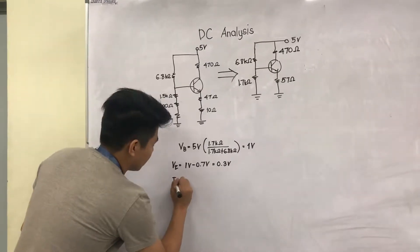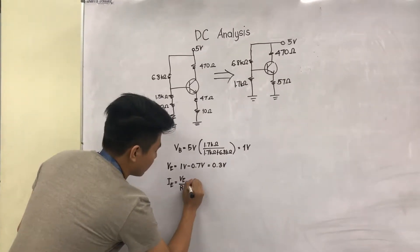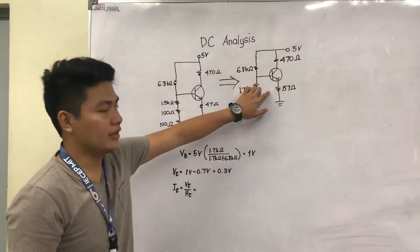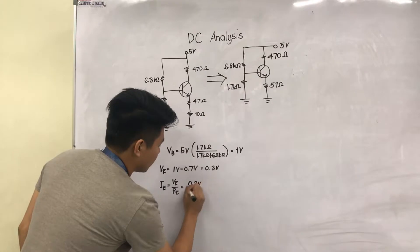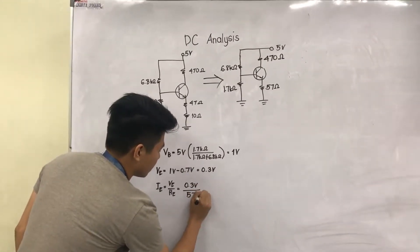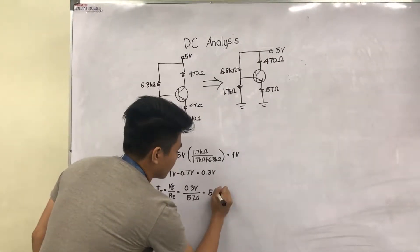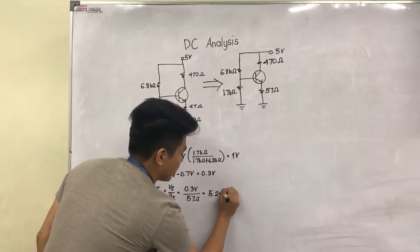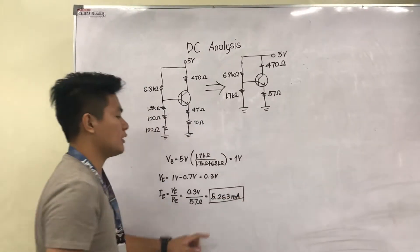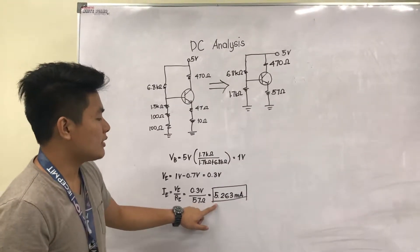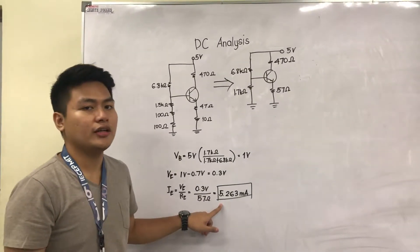IE is equal to VE over RE. In this figure, RE is equal to 57 ohms. And this would be equal to approximately 5.263 milliampere. This DC emitter current will be used to find the internal emitter resistance.